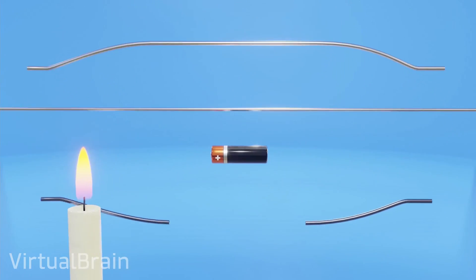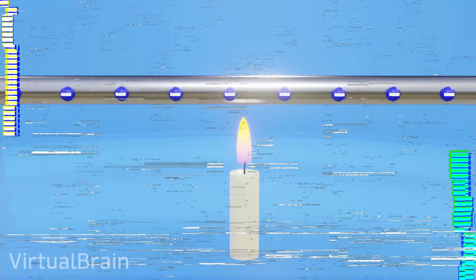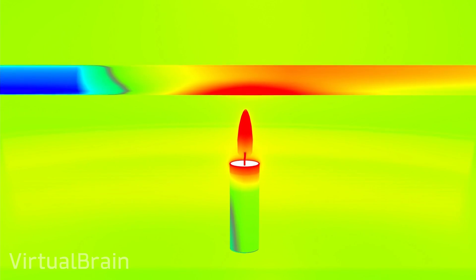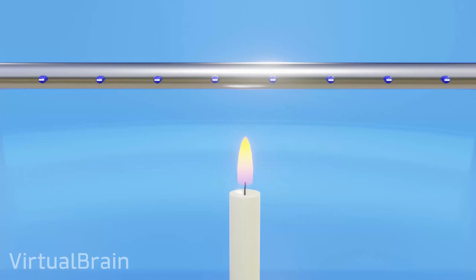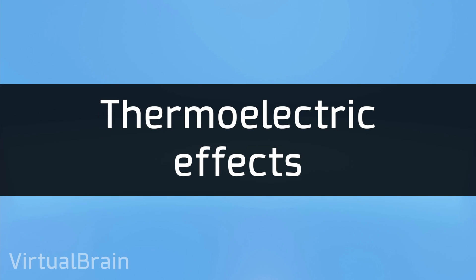Thirdly, the Thompson effect refers to the increase or decrease of temperature in a conductor with a temperature gradient through which a current is passing. And finally, fourthly, thermoelectric effects, which are a generic way of calling all the previous cases.